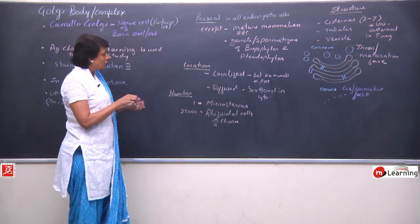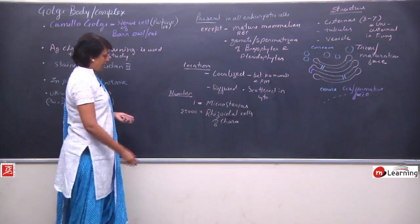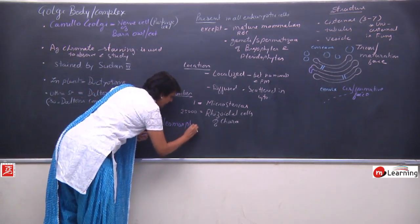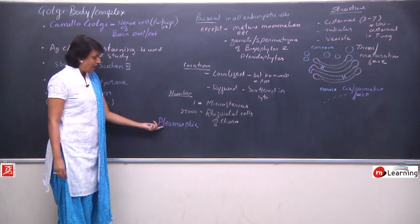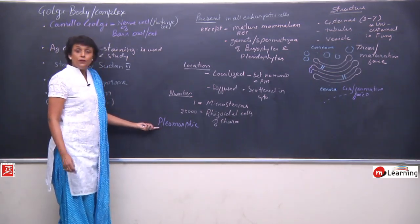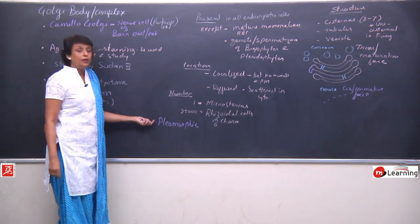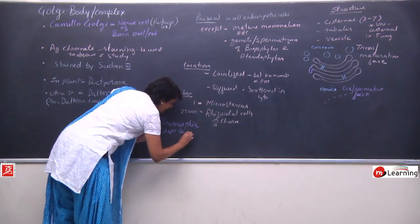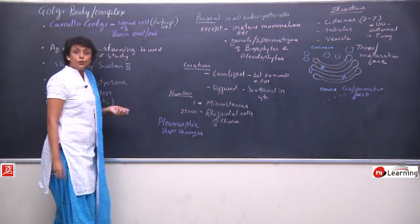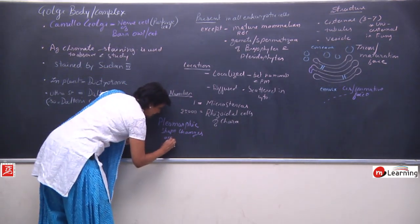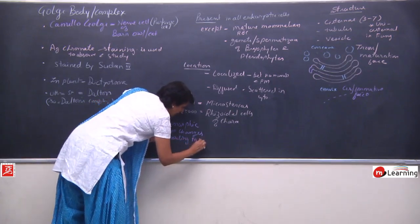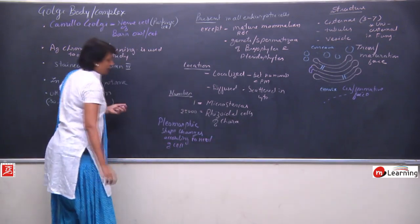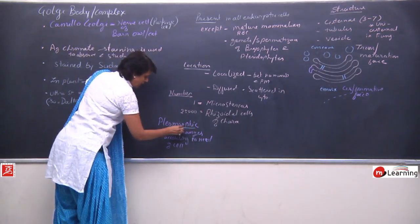Golgi body is also known as a pleomorphic organelle. 'Morph' means form and 'pleo' means changeable — so the shape of Golgi body changes according to the function or need of the cell. Shape changes according to the need of the cell, and it is therefore a pleomorphic organelle.